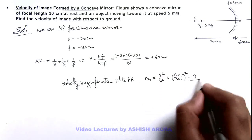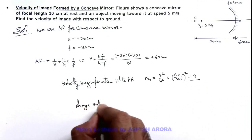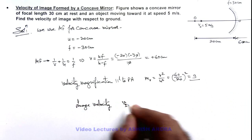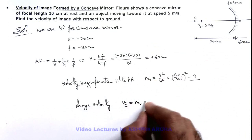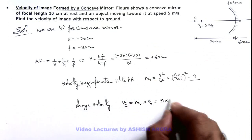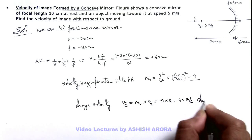So velocity magnification is 9. We can write image velocity, which is parallel to the principal axis, this is magnification of velocity multiplied by the object velocity. So this is 9 multiplied by 5, this is 45 meters per second. That is the result of this problem.